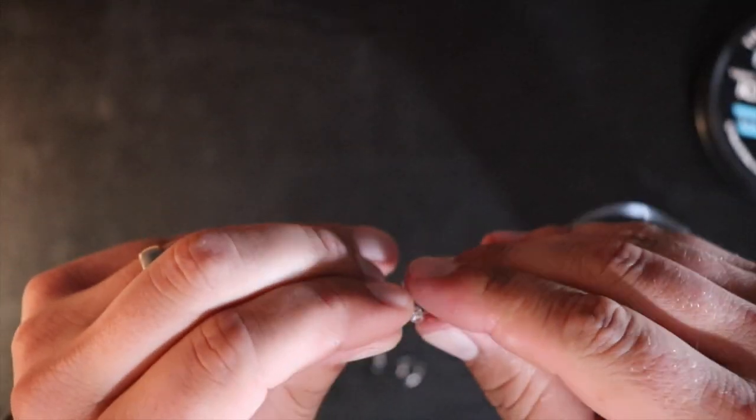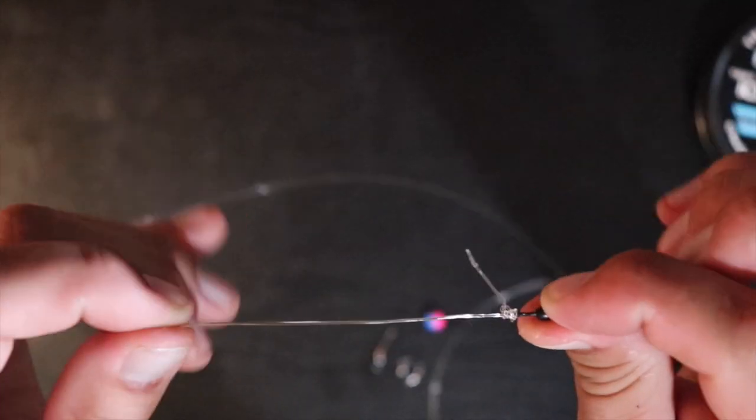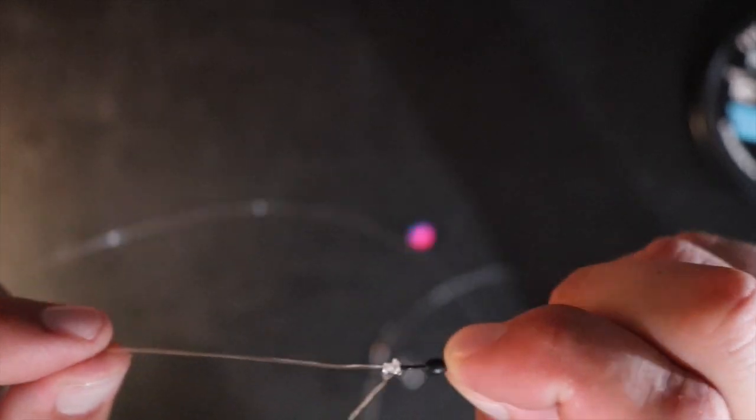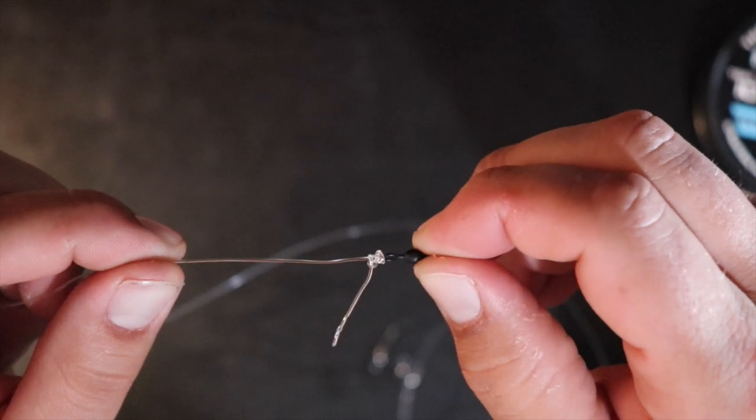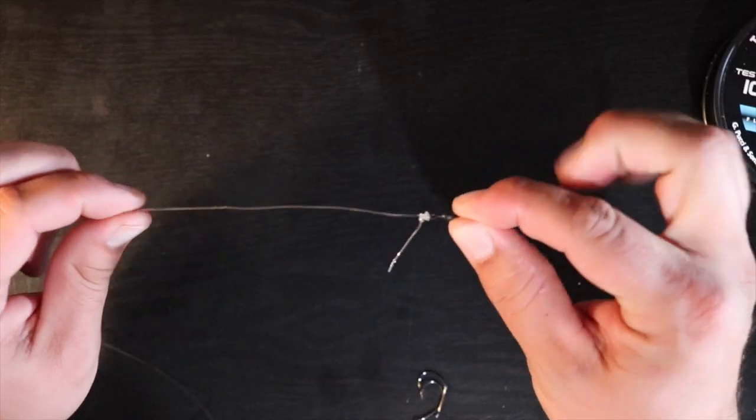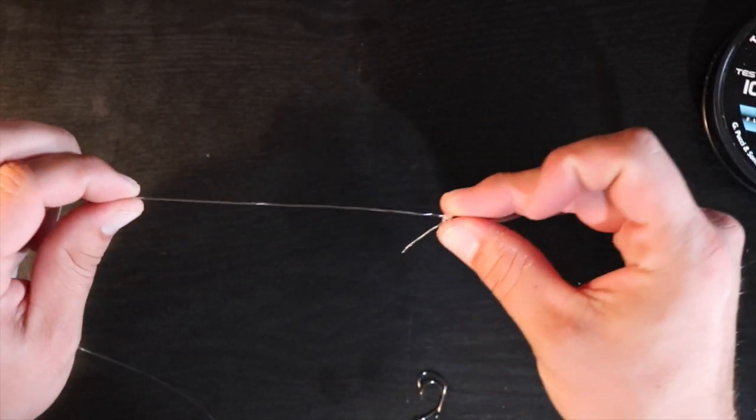Again, most of these fish we're fishing for are pretty small. So got my barrel swivel tied on there. I don't have my scissors on hand right now so I'm not going to worry about the tag end right this second.